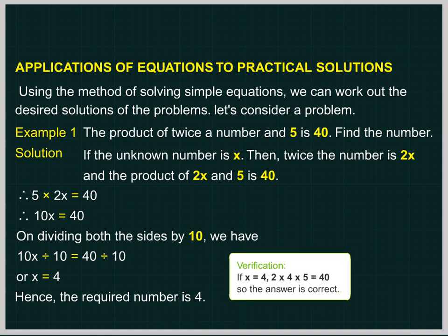Verification. If x equal to 4, 2 multiplied by 4 multiplied by 5 equal to 40. So, the answer is correct.